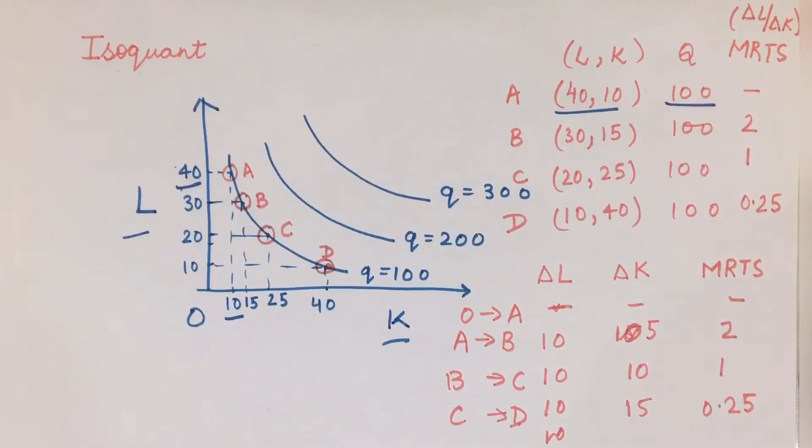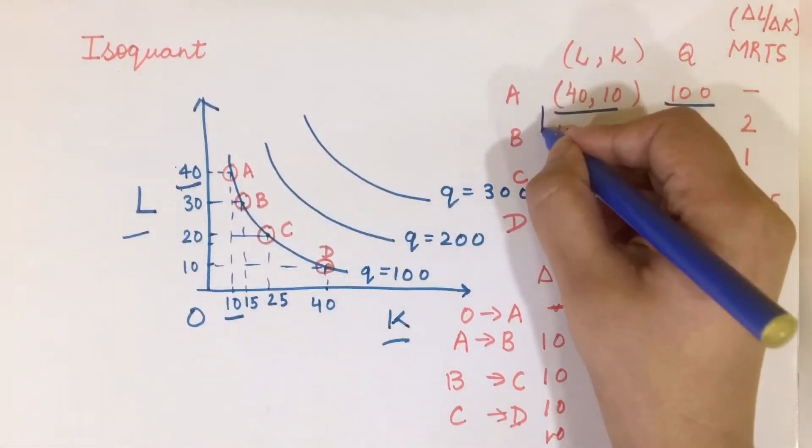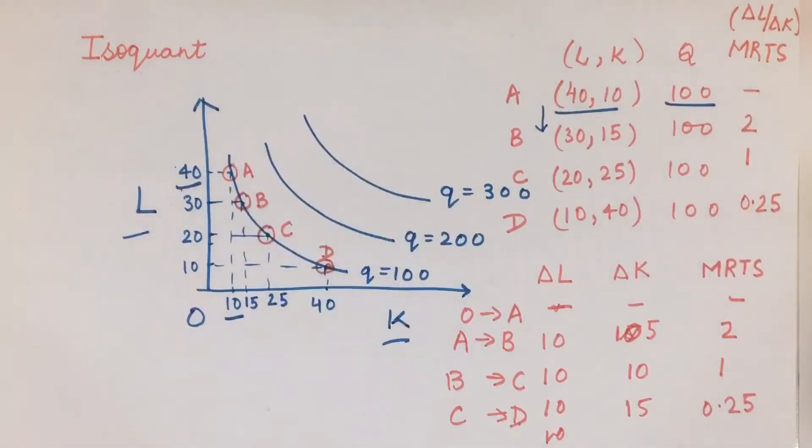Another combination that is possible is (30, 15). Now I am reducing my labor by 10 units, so my labor units are going down and my capital units are increasing. What is happening essentially is that labor, you go away, and I am substituting that labor with some capital.